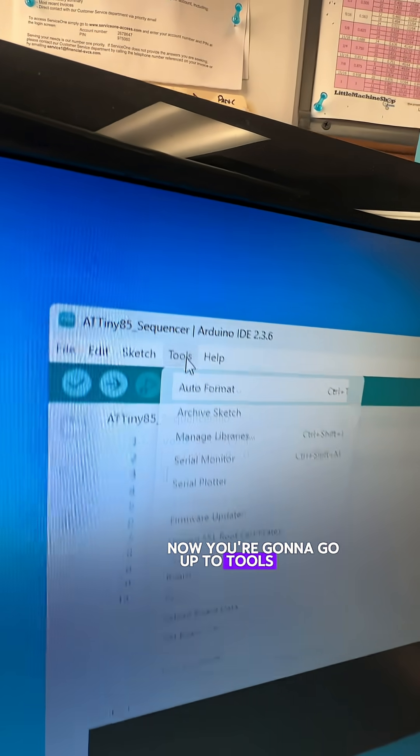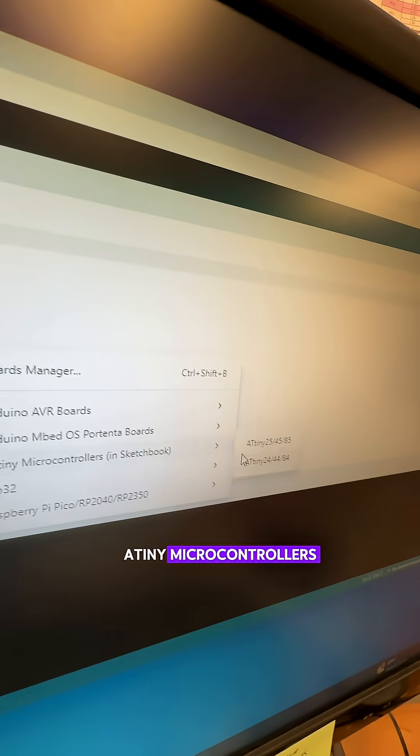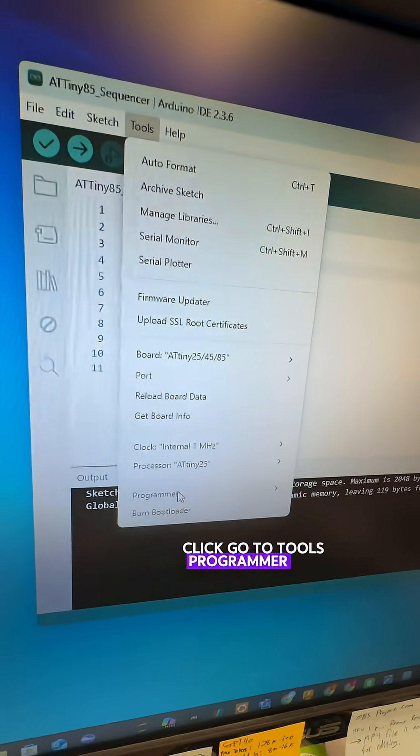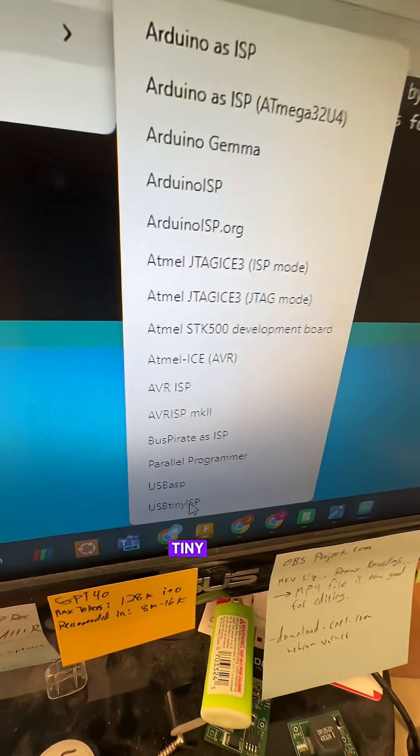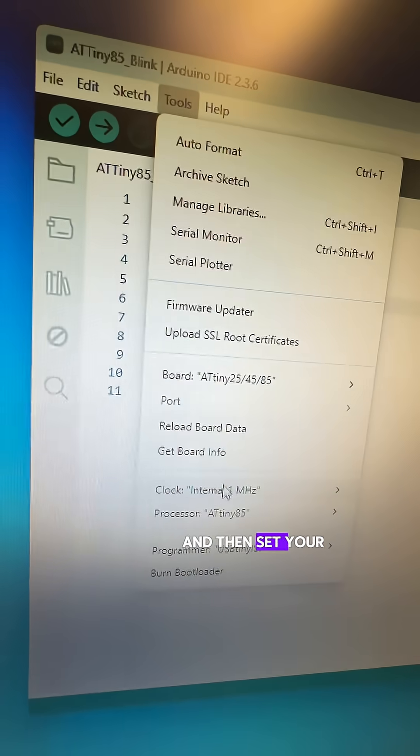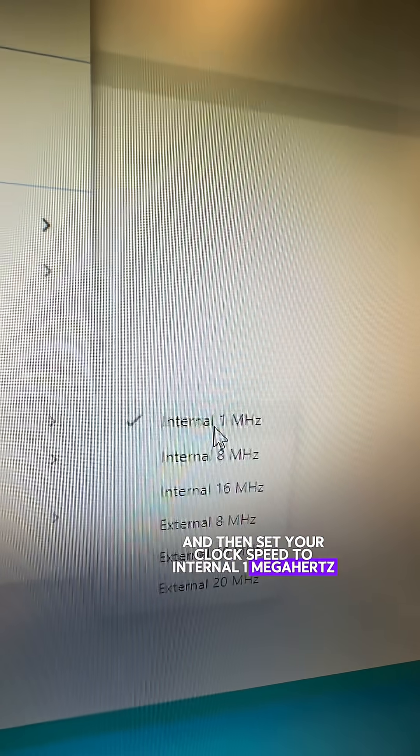Now you're going to go up to Tools, Board, ATtiny Microcontrollers, ATtiny85. Click. Go to Tools, Programmer, USB Tiny ISP. If everything's set up correctly, you'll be able to go into Tools and then set your clock speed to internal 1 MHz.